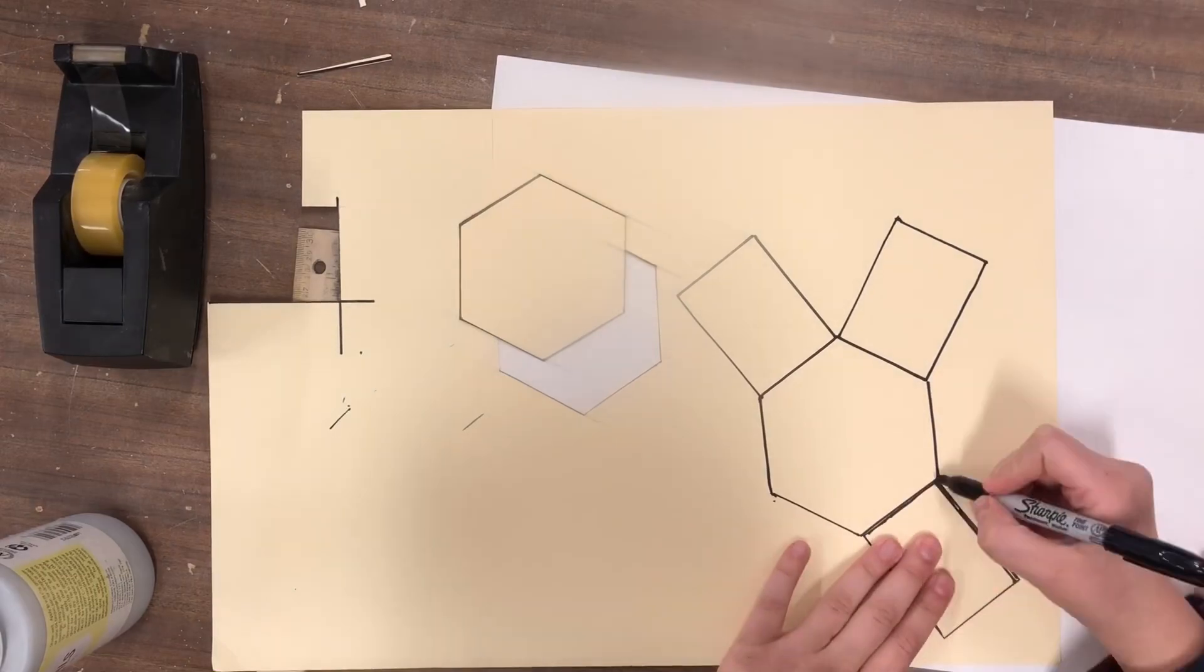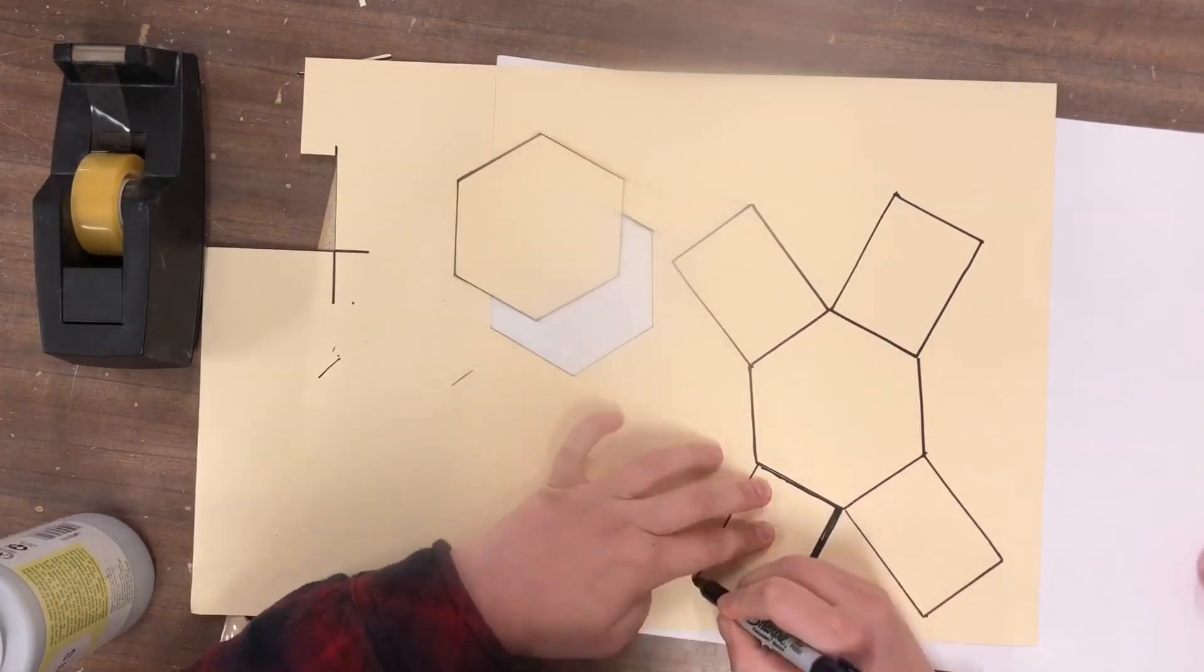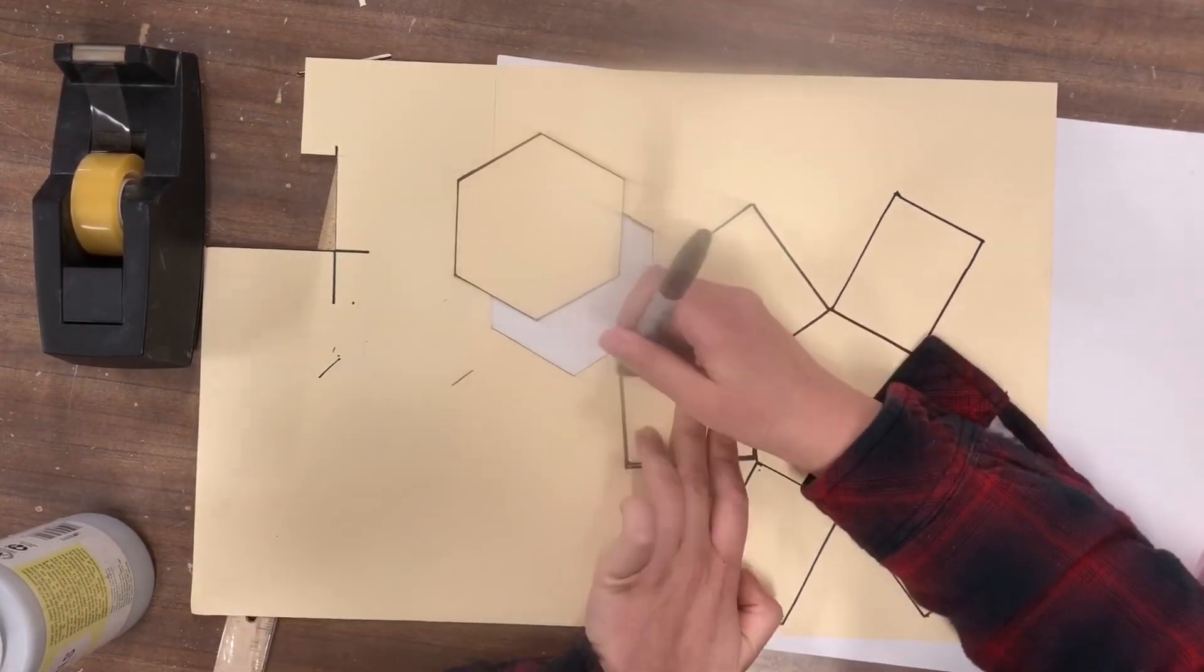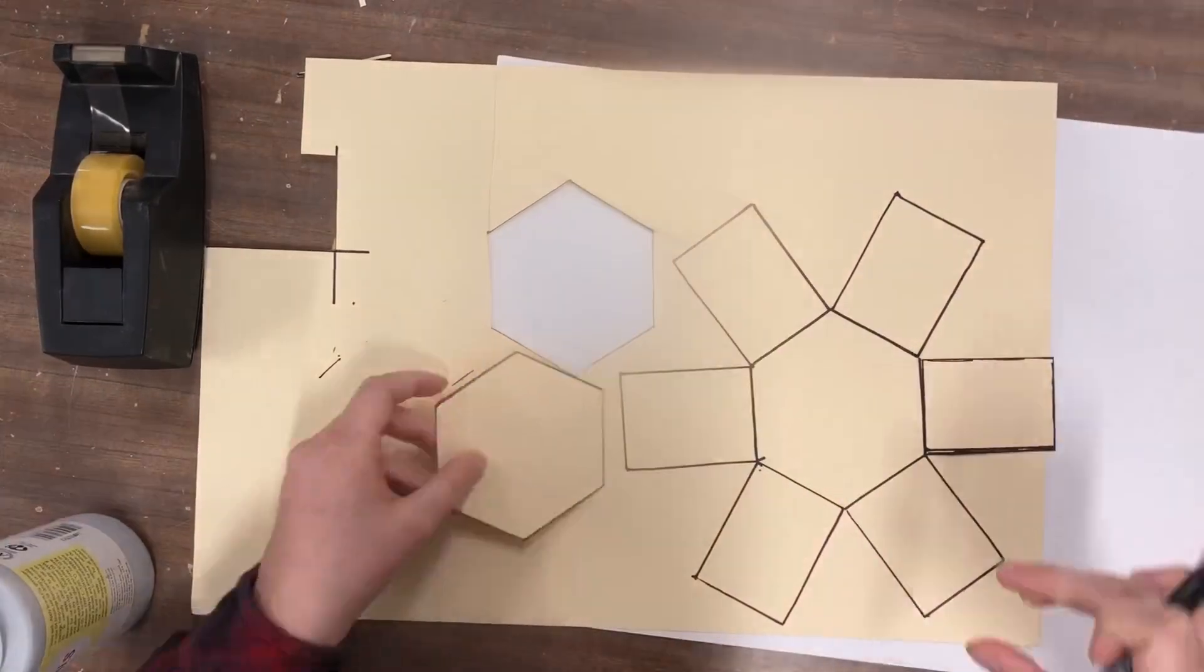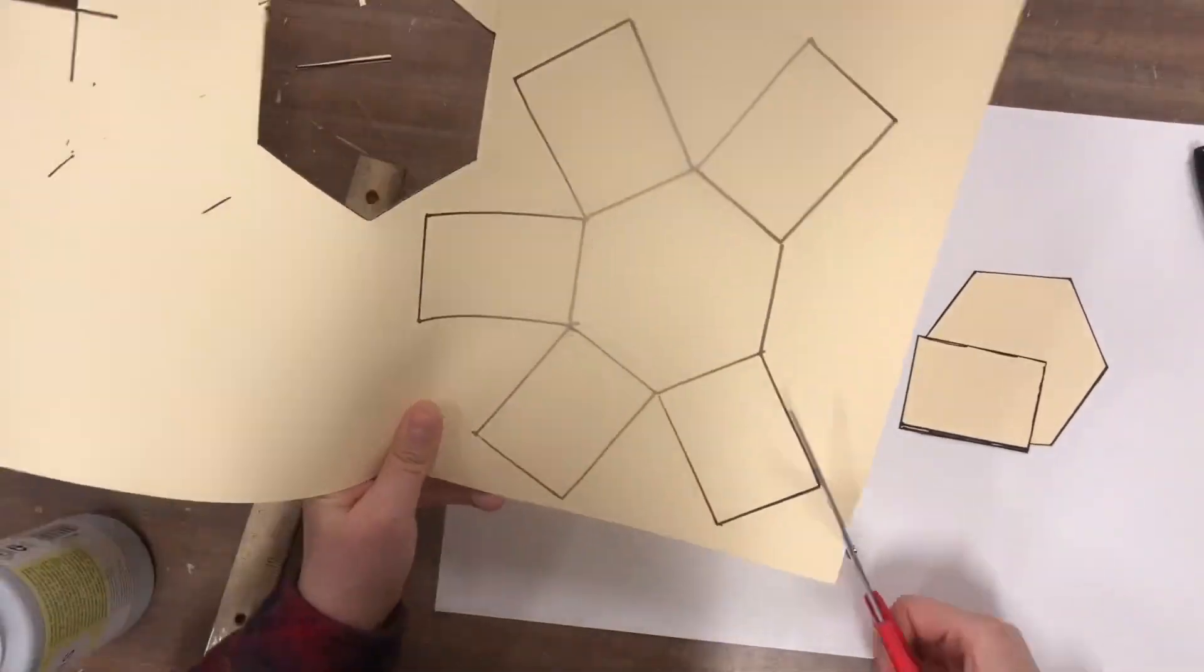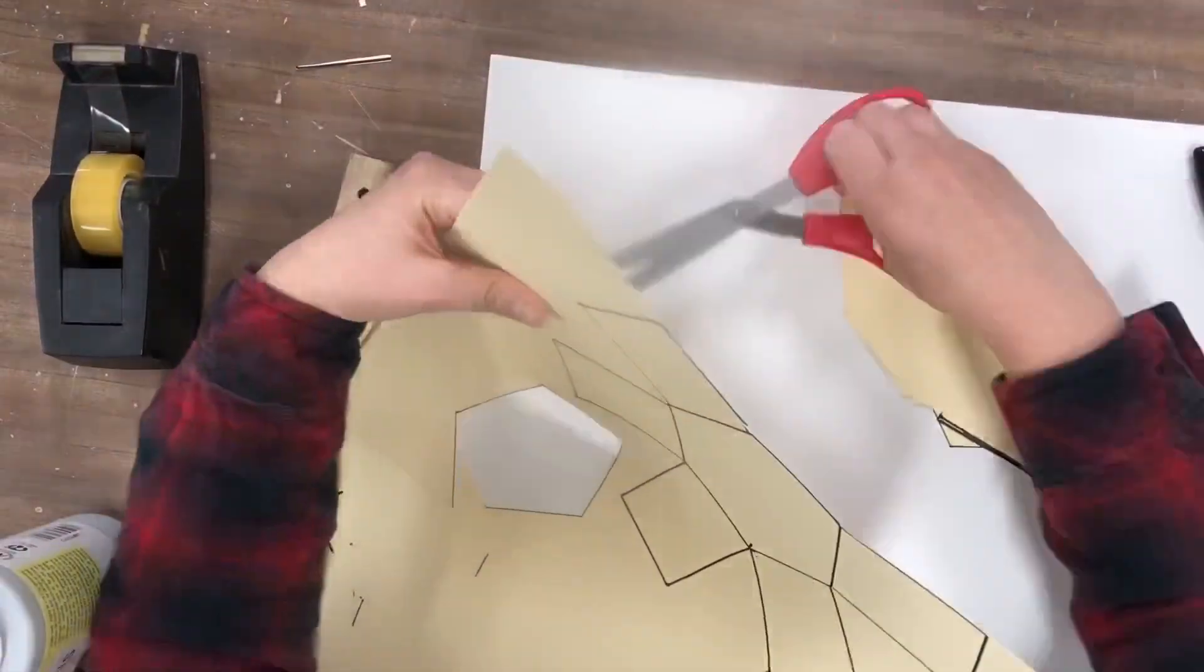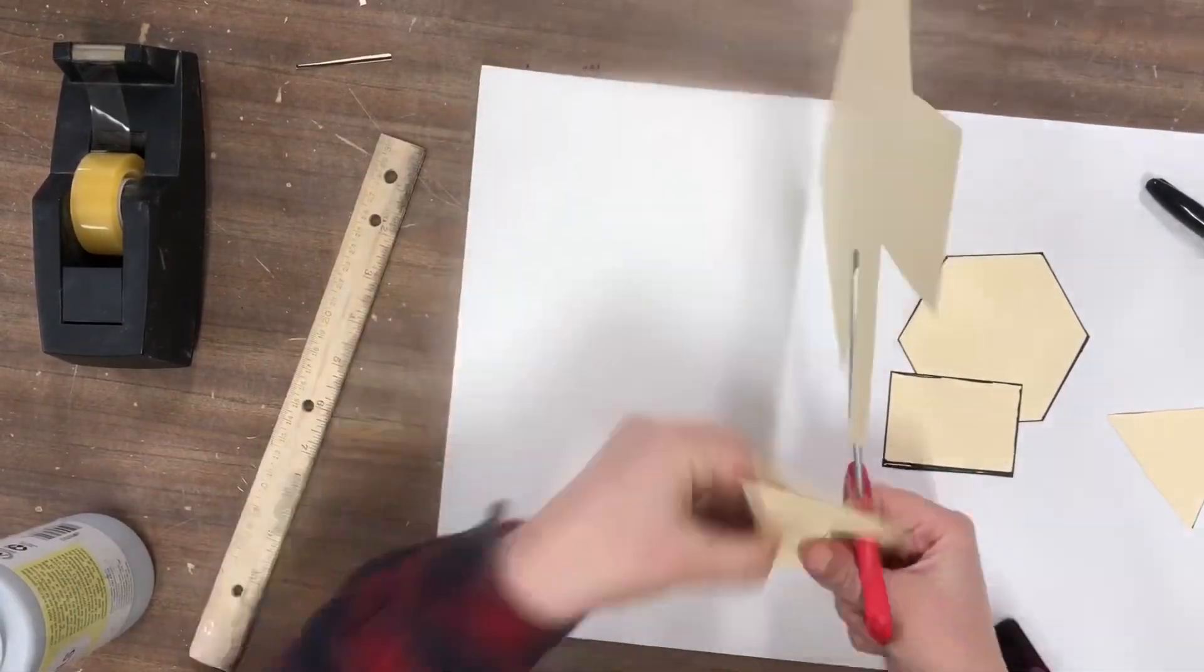Draw out your rectangle and cut it out, and now you can use this rectangle to trace identical rectangles alongside the walls of your hexagon. Once you've got all parts of your form drawn out, go ahead and cut out your net and start assembling it into a prism.